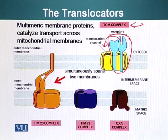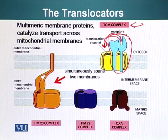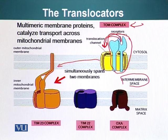The receptor transfers the protein to the translocation channel. All proteins are initially sent to the matrix space, and then after they have reached the matrix space, some proteins are sent to the intermembrane space if they have an appropriate signal. TOM complexes work with another channel protein present in the inner mitochondrial membrane.